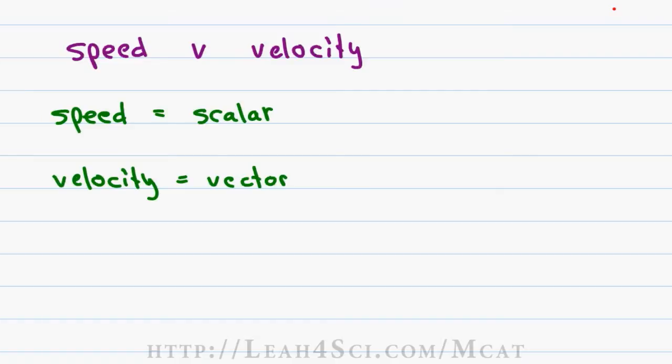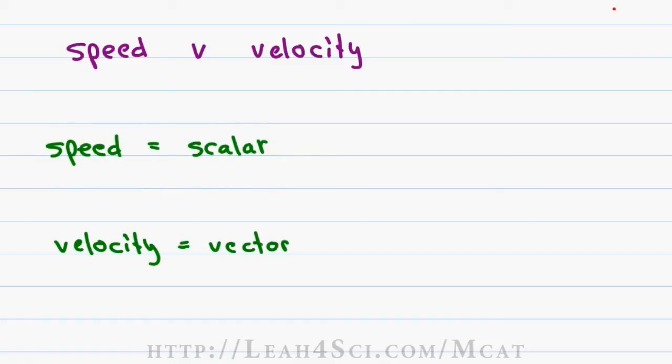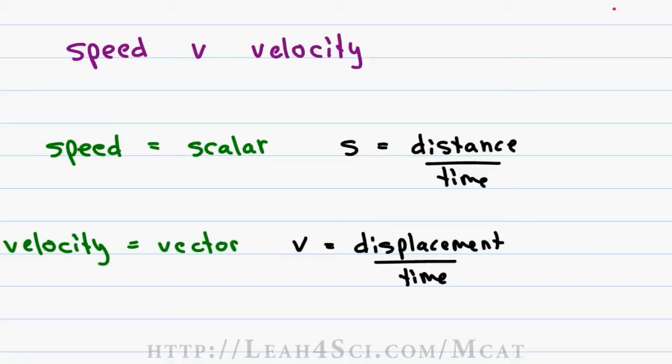The formula for speed and velocity are very similar but they actually mean something completely different. We'll use S for speed, and speed equals distance over time. Velocity is a vector, so in physics you were taught to put an arrow over the V. On the MCAT we'll just assume that we know it's a vector, and the formula is displacement over time, which you'll see written as delta x over delta t.